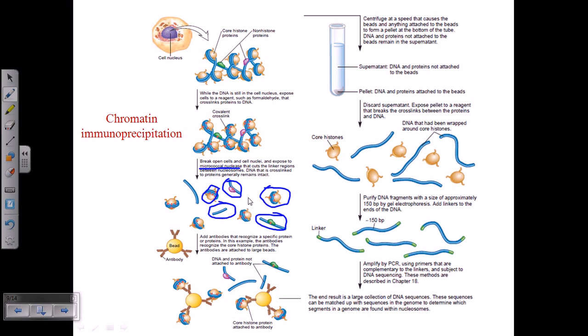Using antibodies. You can add antibodies that recognize a specific protein or a set of proteins. In this example, the antibodies recognize the core histone proteins. The antibody is provided which is specific to the core histone proteins. The core histone complexes will bind with this antibody-coated complex which has a bead.